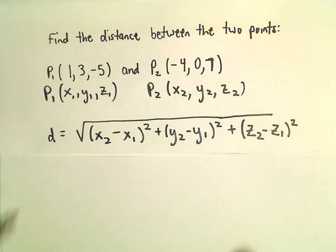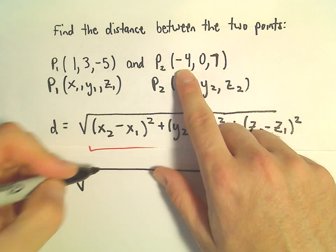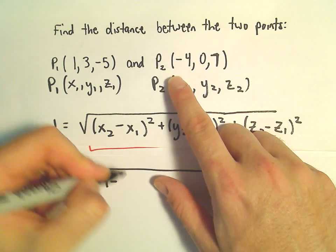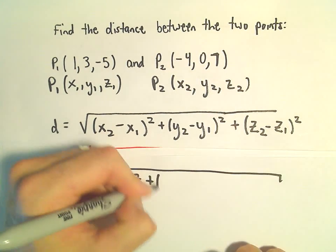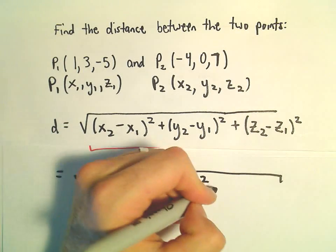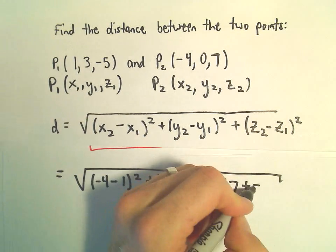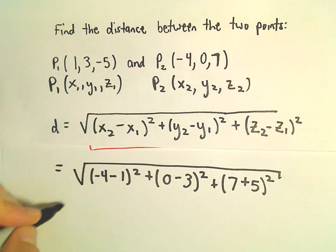All right, so we can do this without too much trouble. We've got the square root. We would do negative 4 minus 1 squared. y2 minus y1 would be 0 minus 3 squared. And then we would have 7 minus negative 5, or 7 plus 5 squared.